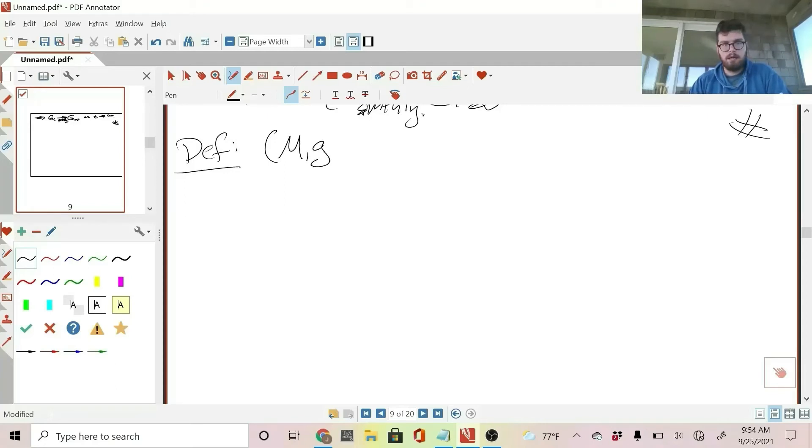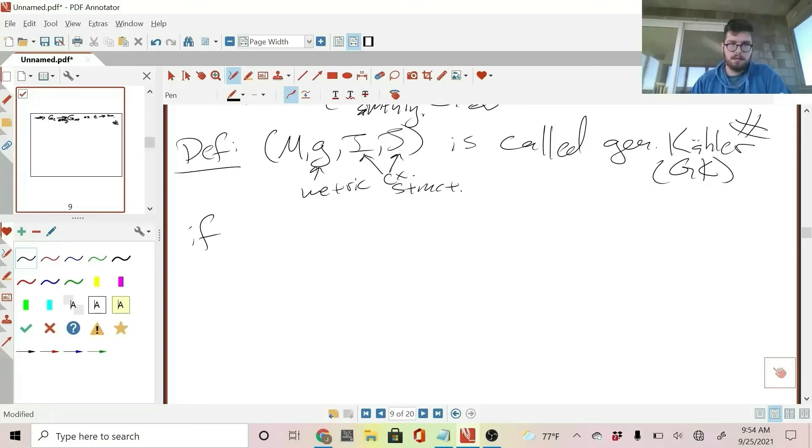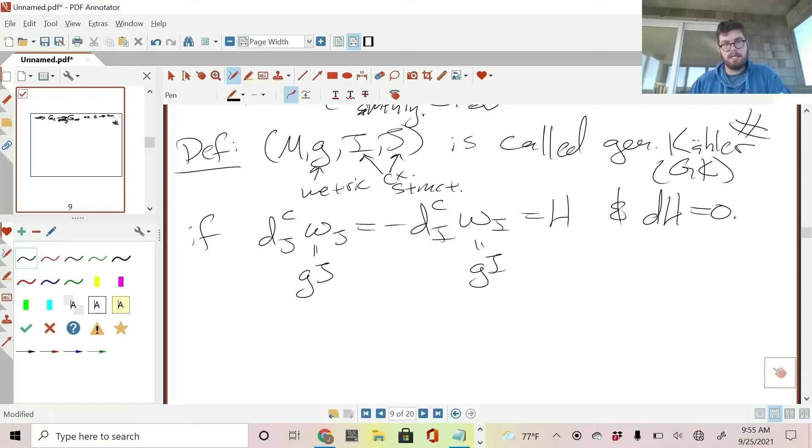So the first definition is what is generalized Kahler. So manifold M, g, i, j, hermitian metric, i and j are complex structures, is called generalized Kahler, or a lot of times it's denoted GK, if the j complex differential of omega j is equal to minus d i c omega i. We call that h and we want h to be closed. This is a generalized Kahler manifold, it's bi-hermitian, with this kind of integrability condition.